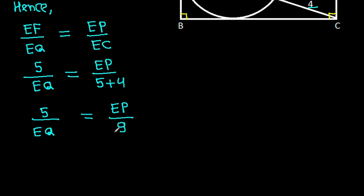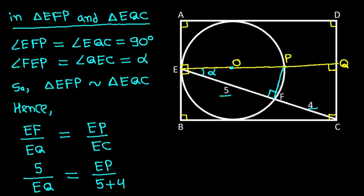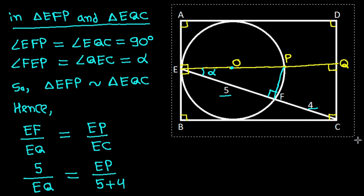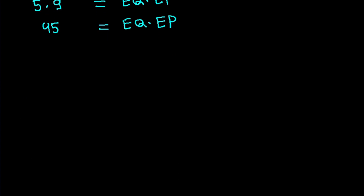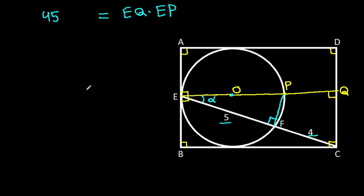By cross multiplication, 5 times 9 equals EQ times EP, so 45 equals EQ times EP.